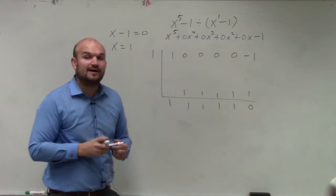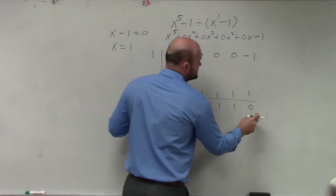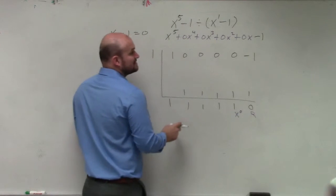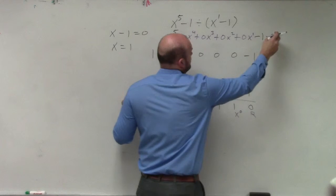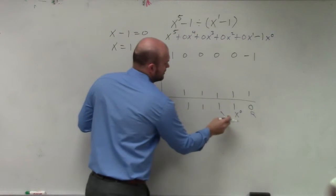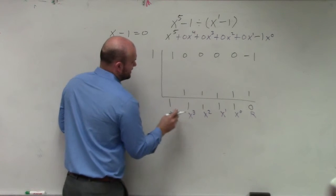So we have a remainder of 0, so that evenly divides. That is your remainder. That is your constant. Constant, linear, quadratic, cubic, quartic.